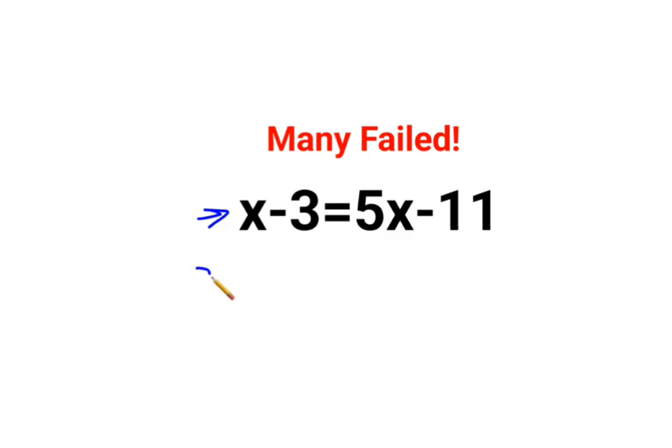We have X minus X minus 3 equals to 5X minus X minus 11. So this and this gets cancelled. We are left with minus 3 equals to 5 minus X is 4X minus 11.